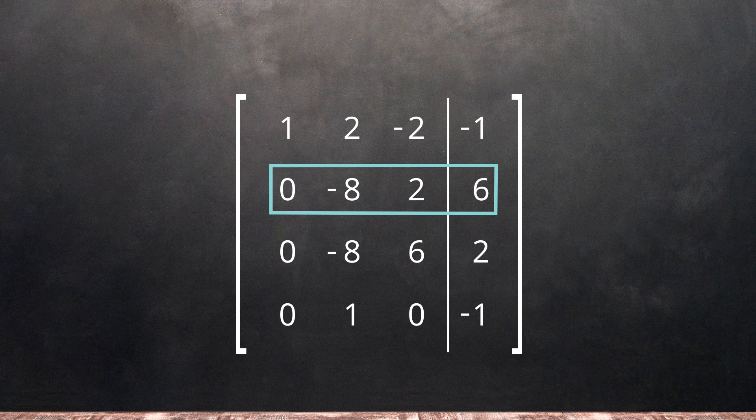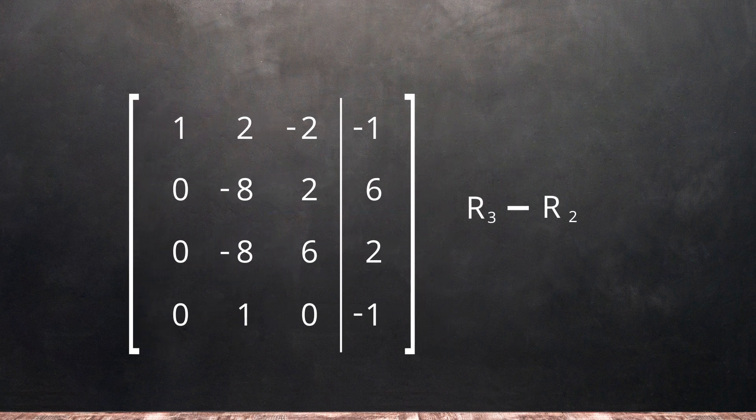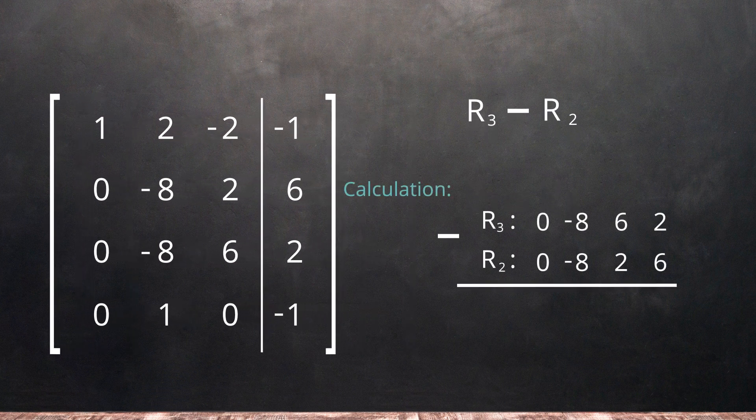To start, we'll change the third row to make the negative 8 into a 0 by subtracting row 2 from row 3. Performing the calculation, we get our new row 3 and can rewrite our matrix.